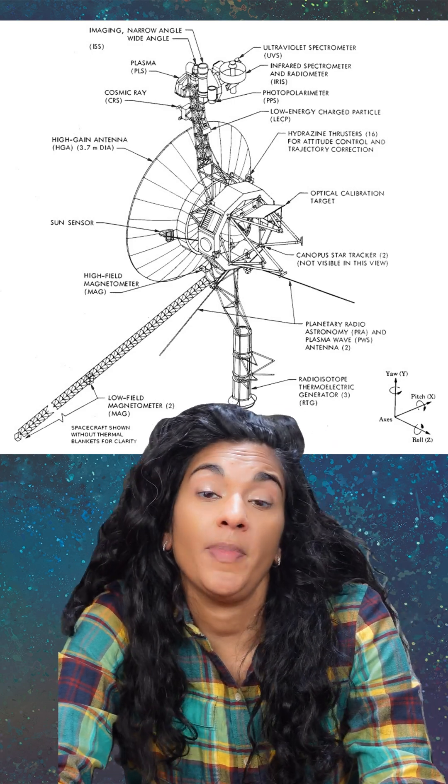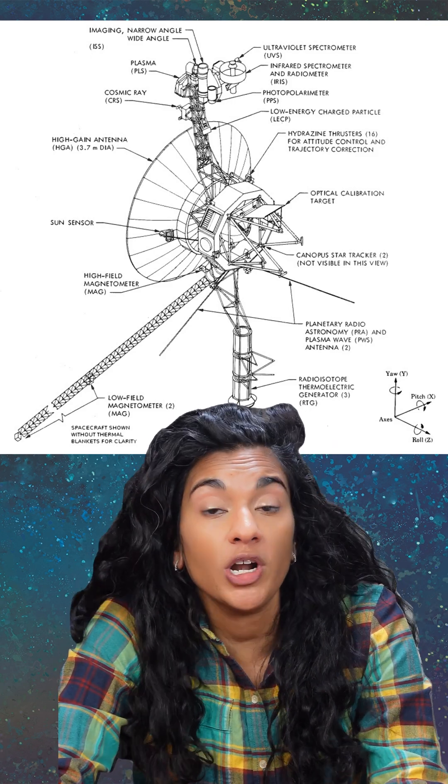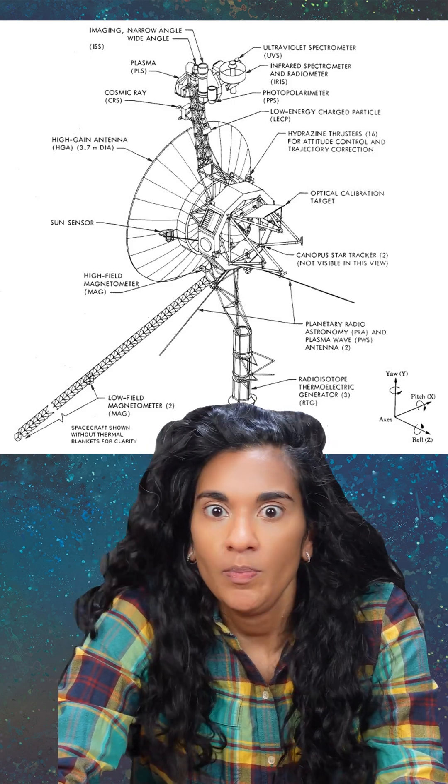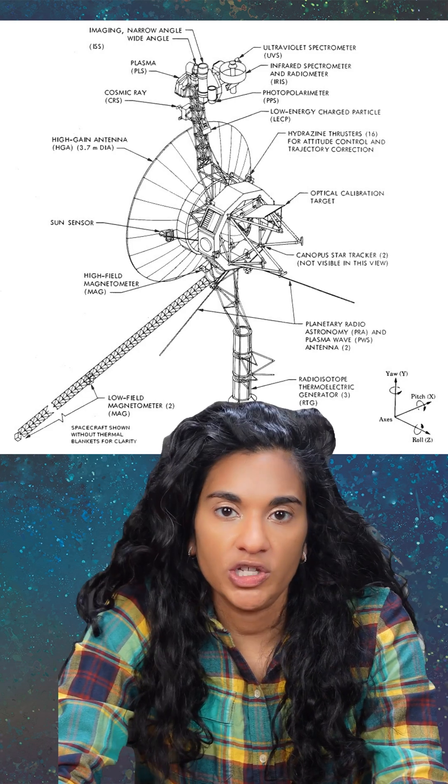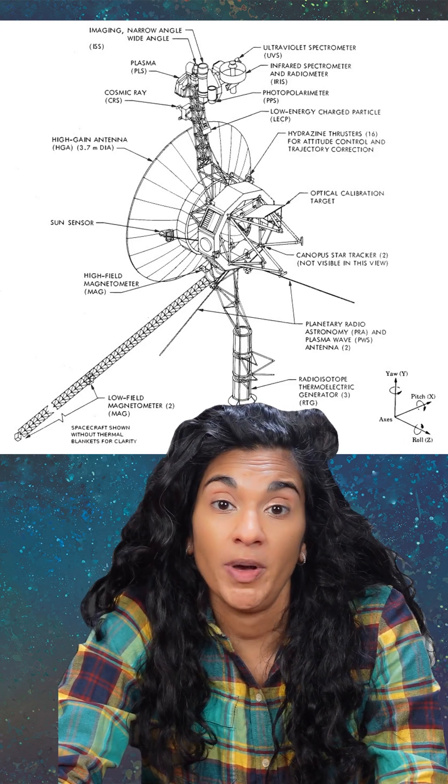A healthy Voyager spacecraft would perform about 40 pulses per day to keep itself pointed at Earth, but Voyager 1 isn't healthy. Over the years, the fuel tubes inside the thrusters have become clogged.